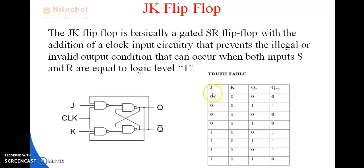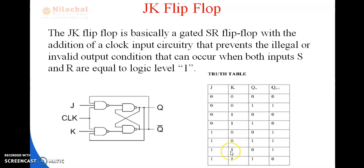So to summarize the truth table of JK flip-flop: when both inputs are 0, the output remains no change — the output remains the same. When J equals 0 and K equals 1, the output is reset, that is 0. When J value is 1 and K value is 0, the output is set, that is 1.